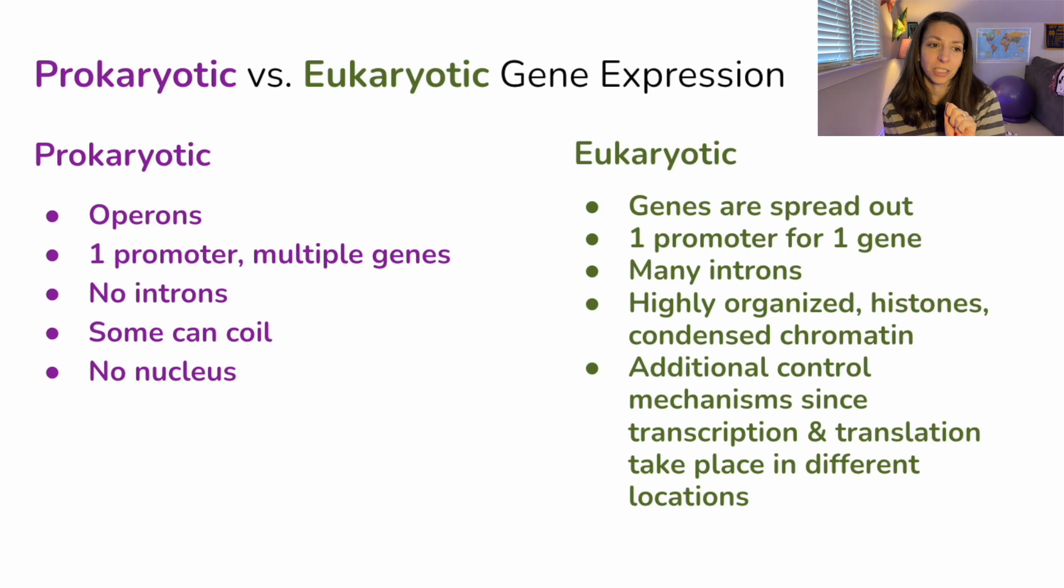Let's take it back to prokaryotic gene expression and compare the two really quickly. In prokaryotic gene expression, a lot of that is going to rely on operons, we can have one promoter for multiple genes, and there are no introns. Some sections can coil, but there's no nucleus. And so we have transcription and translation sometimes taking place in the same locations within the cell.